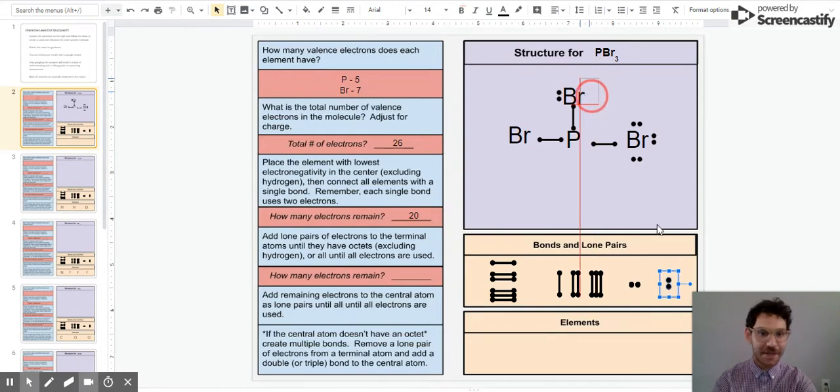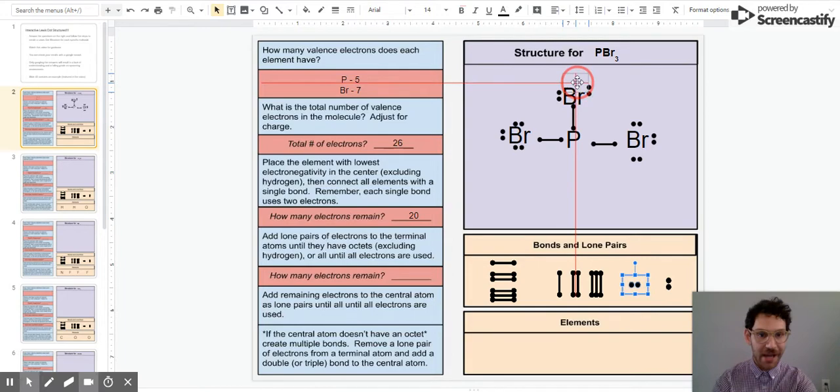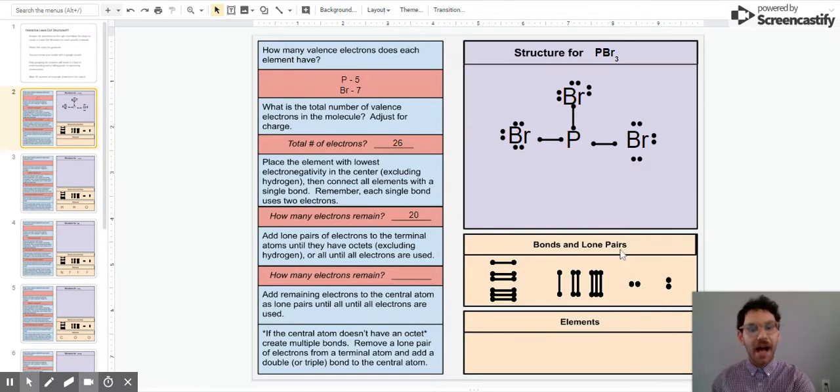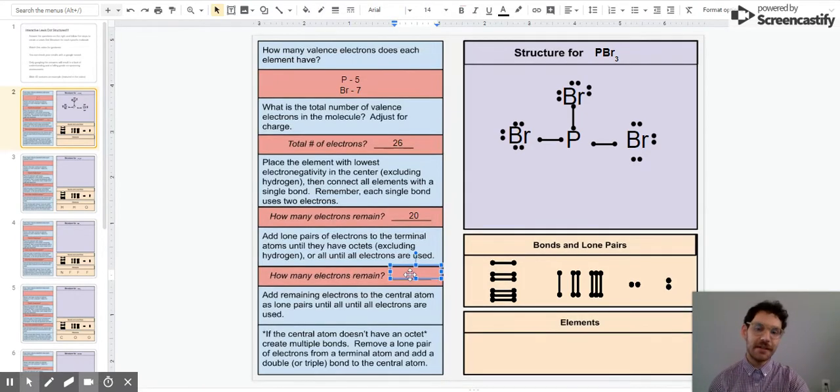I'll just keep clicking and dragging to move lone pairs over to my bromines until all of them have an octet. I've completed that step. I gave all my terminal atoms, the ones on the outside, octets. How many electrons remain? I used 18 and 20 minus 18 gives me two electrons remaining.